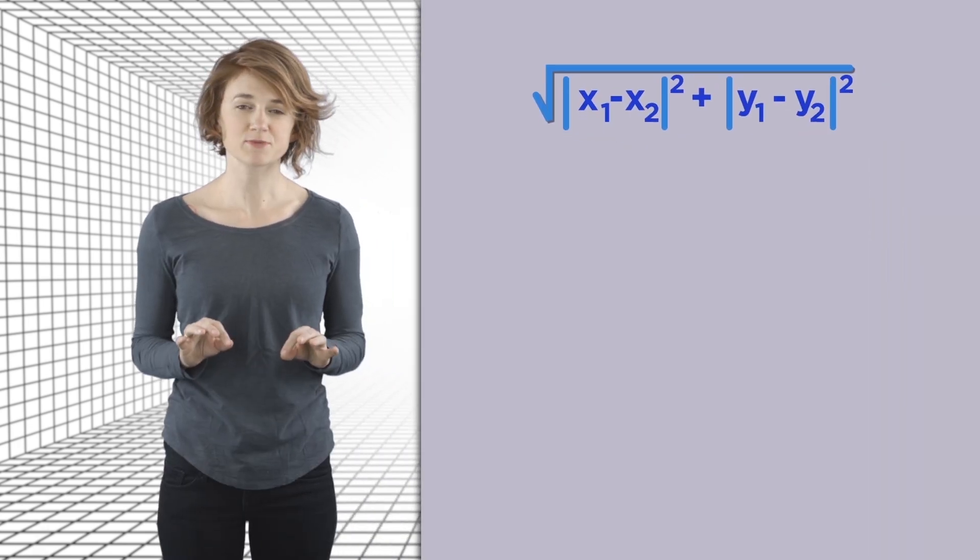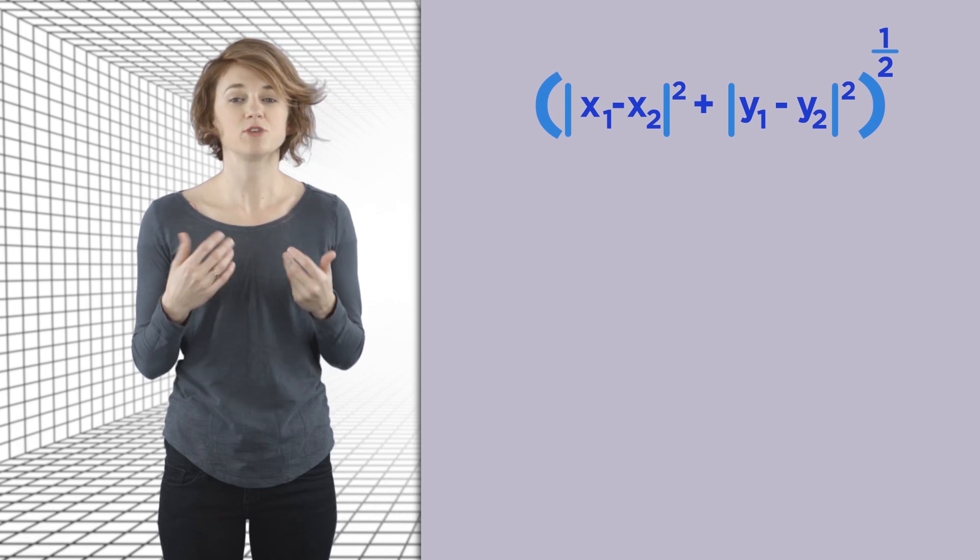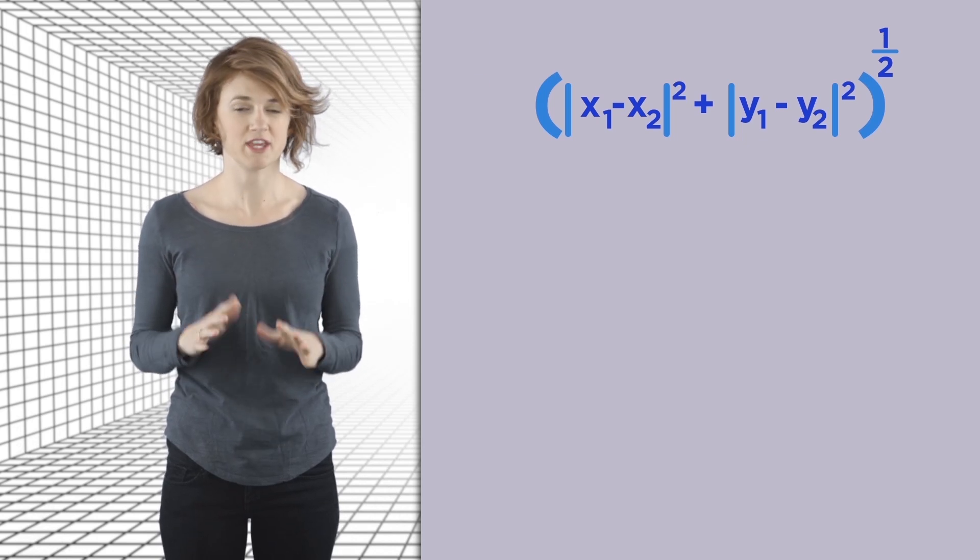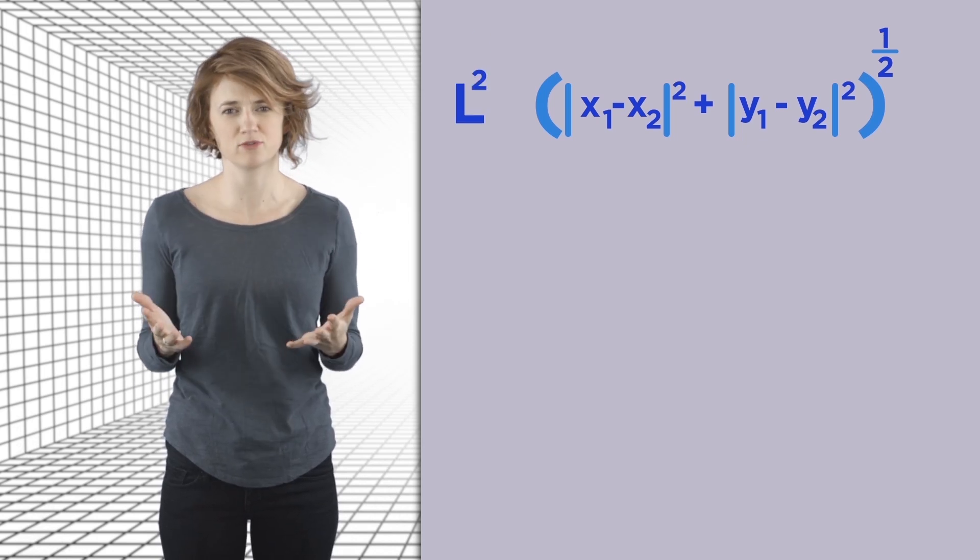Let's go back to the Euclidean metric, where the distance between two points is measured this way. Let's rewrite it this way. The Euclidean metric is also called the L2 metric because of all the twos in the formula.